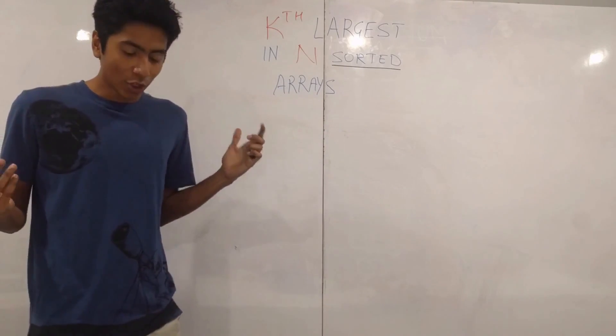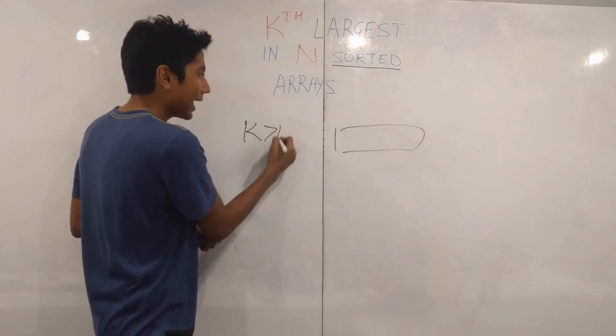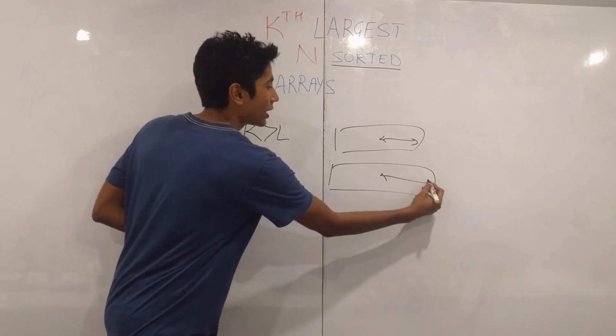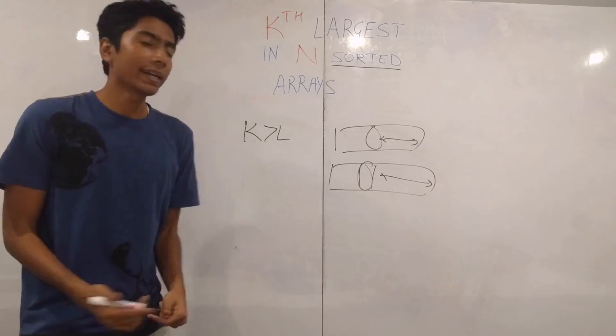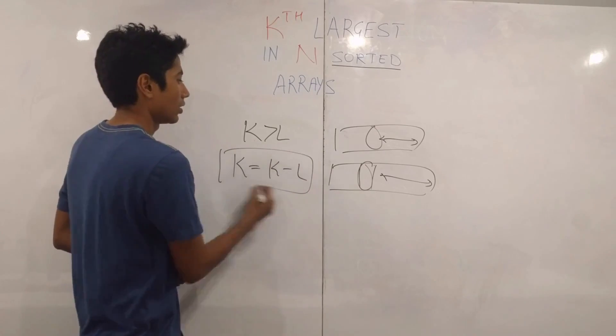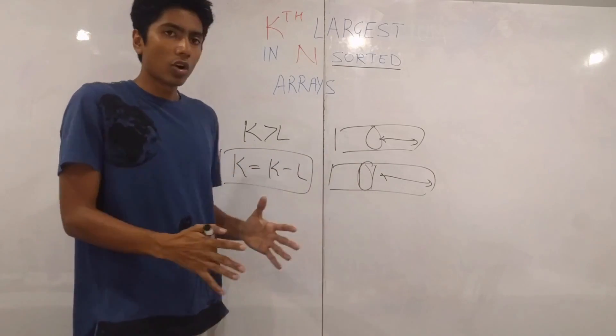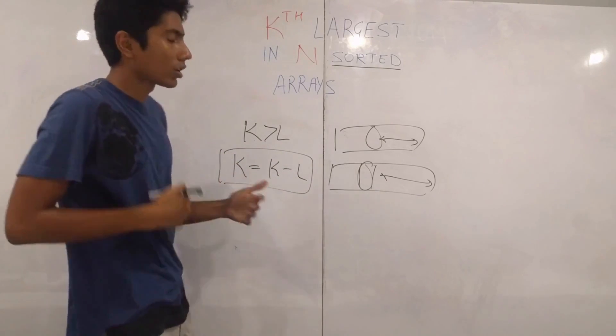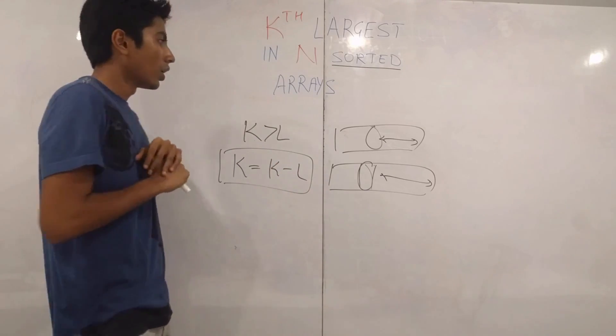And there is also another thing that if you have k greater than l, then when you are looking amongst the indexes which are greater than the elements that you have found, you need to actually update k. So k becomes k minus l. Similar to how you can think in binary search. So your middle becomes the new low. Similar to that is the index that you are searching for is updated by subtracting with l.